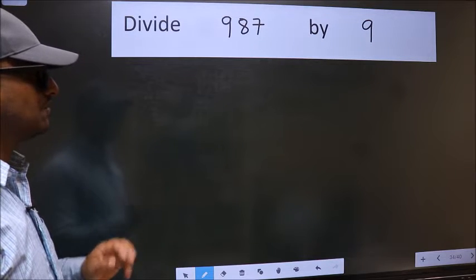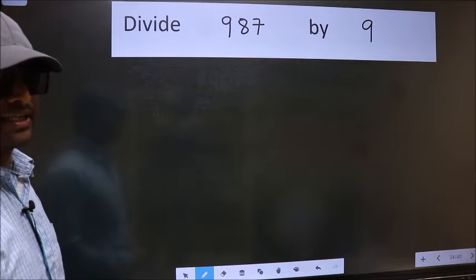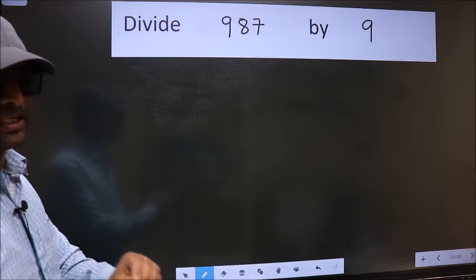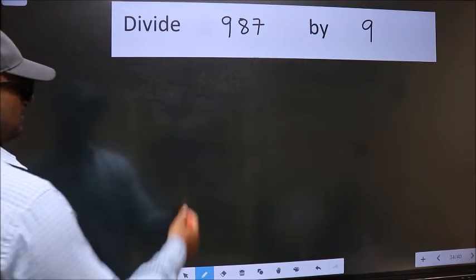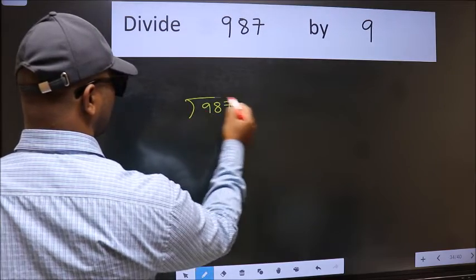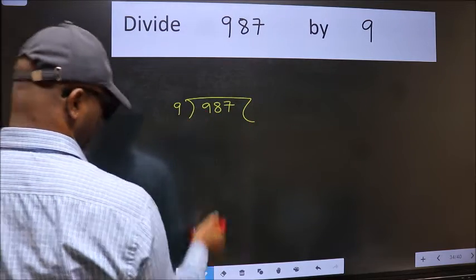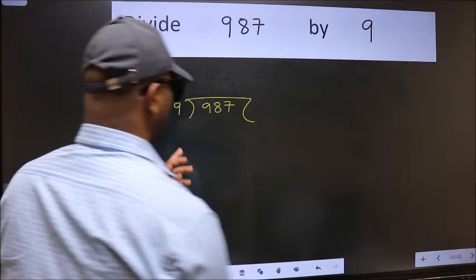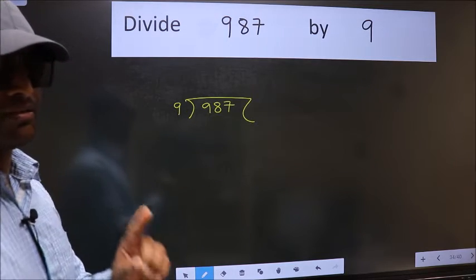Divide 987 by 9. To do this division, we should frame it in this way. 987 here and 9 here. This is your step 1.